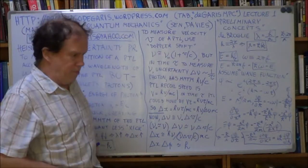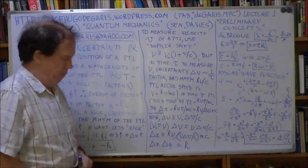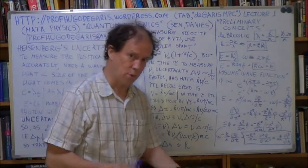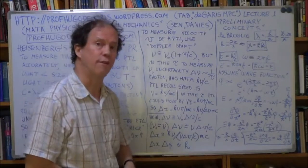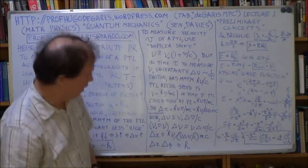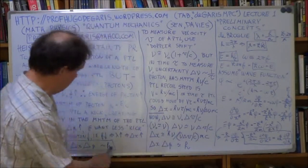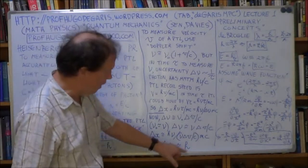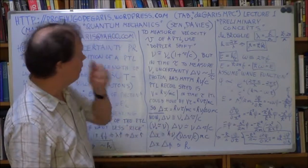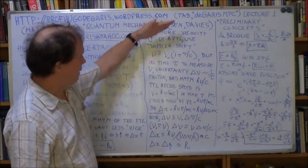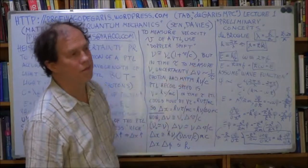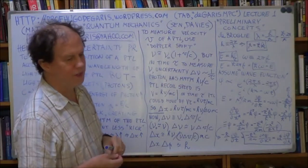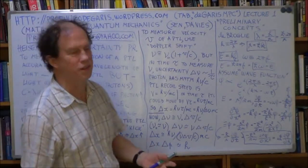A bit more difficult — much the same thing, but using more detailed physics formulas. And we actually derive this again, but this time with an H — we actually derive the H. There are many ways to do this, and almost every different quantum physics textbook has a different way to do this.